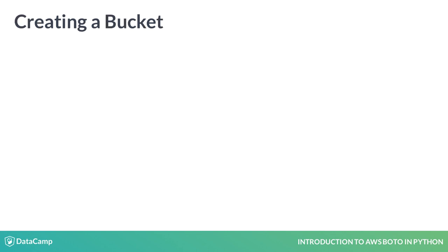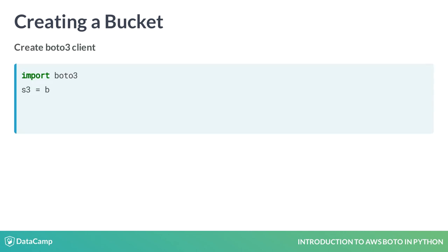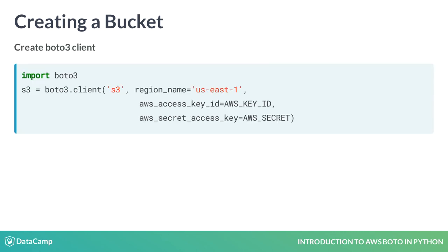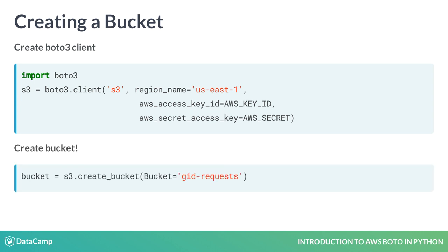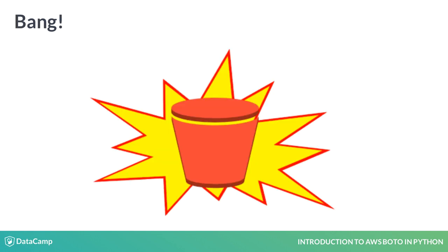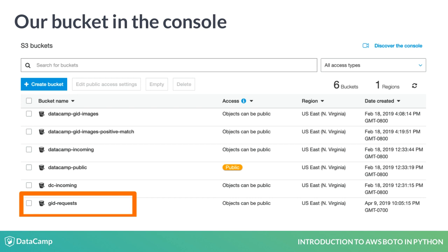Let's start off by making a new bucket called GID requests. We create a Boto3 client that lets us interact with AWS S3, then we call the client's createBucket method, passing the bucket name as the argument. Ta-da! We have a shiny new bucket. We can see it in the console as well.